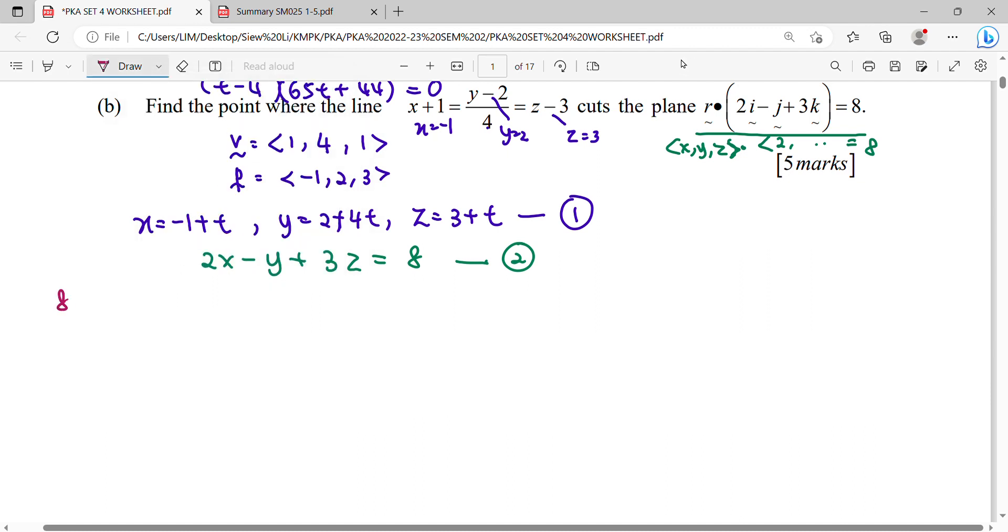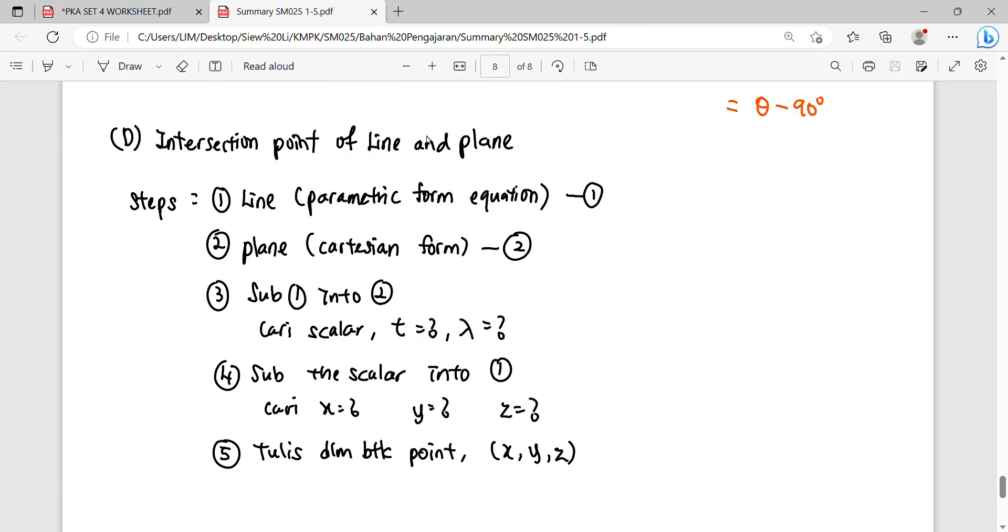Then we can start substituting equation one into equation two. Expand. How many t here? Negative one t only, right? So how many constants? Minus two, minus two plus nine means plus five, minus five equals to eight. So this is our step number three: substitute, find out what's your t, then substitute back into equation one. Substitute back into the line equation, find out what is your x, y, z.